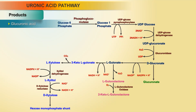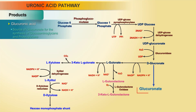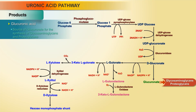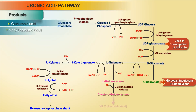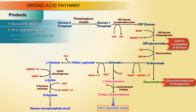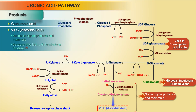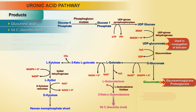Products: Glucuronic acid. It is the source of glucuronate for the synthesis of glycosaminoglycans and proteoglycans, for phase 2 conjugation reaction which is conjugation of bilirubin, for Vitamin C (also known as ascorbic acid), but not in higher primates and mammals because they lack L-gulonolactone oxidase, and for pentoses.